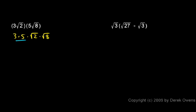And the 3 times 5 is just 15, and this square root of 2 times the square root of 8 can be written as the square root of 16. The square root of 16 you recognize as being equal to 4, so this is just 15 times 4, which equals 60.